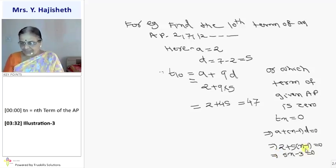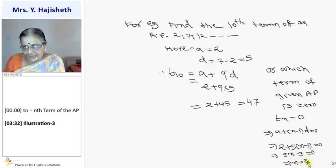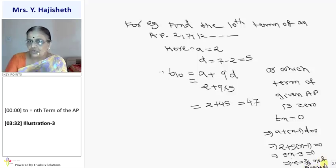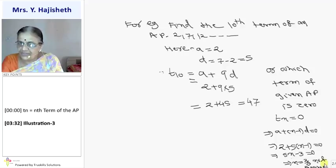So the answer is, there is no term in this sequence whose value is 0. Kya aata hai ismein, N kya aata hai? N is 3 by 5, not possible. Because number of terms cannot be a fraction. So which term of given AP is 0? No term. Okay?